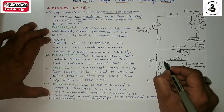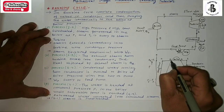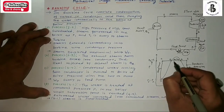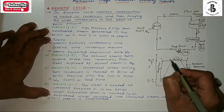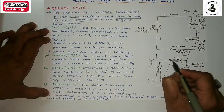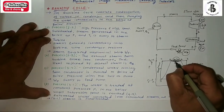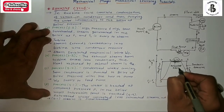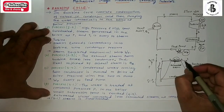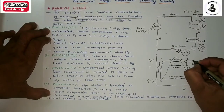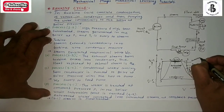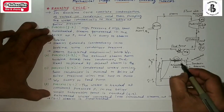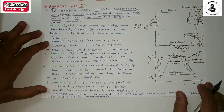Process 4 to 1: the water is heated at constant pressure P1 in the boiler until the saturation temperature is reached. During process 4 to A, heating occurs, and then from A to B saturated steam is formed at constant pressure. From B to 1 the steam enters the superheated phase with the application of boiler accessories, producing dry superheated steam.